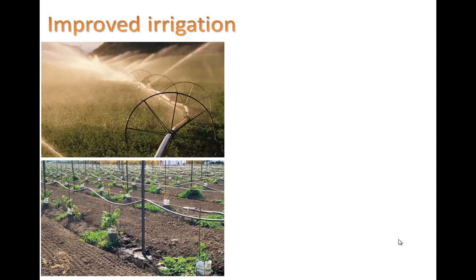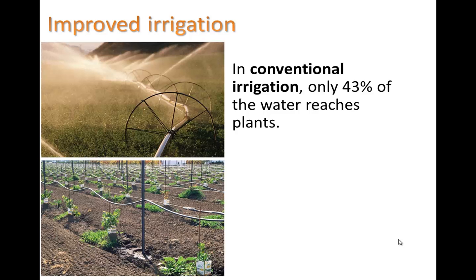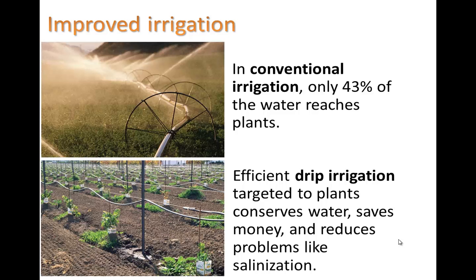Let's take a look at improving irrigation. Conventional irrigation means only 43% of the water reaches the plants. What happens to the other 57%? A lot of it gets evaporated even before it hits the plants — carried away by wind, or it lands on the leaves and evaporates, whereas it's really the roots of the plant that need that water. A more efficient way is drip irrigation, which is targeted to plants and conserves water, saves money, and reduces problems like salinization.